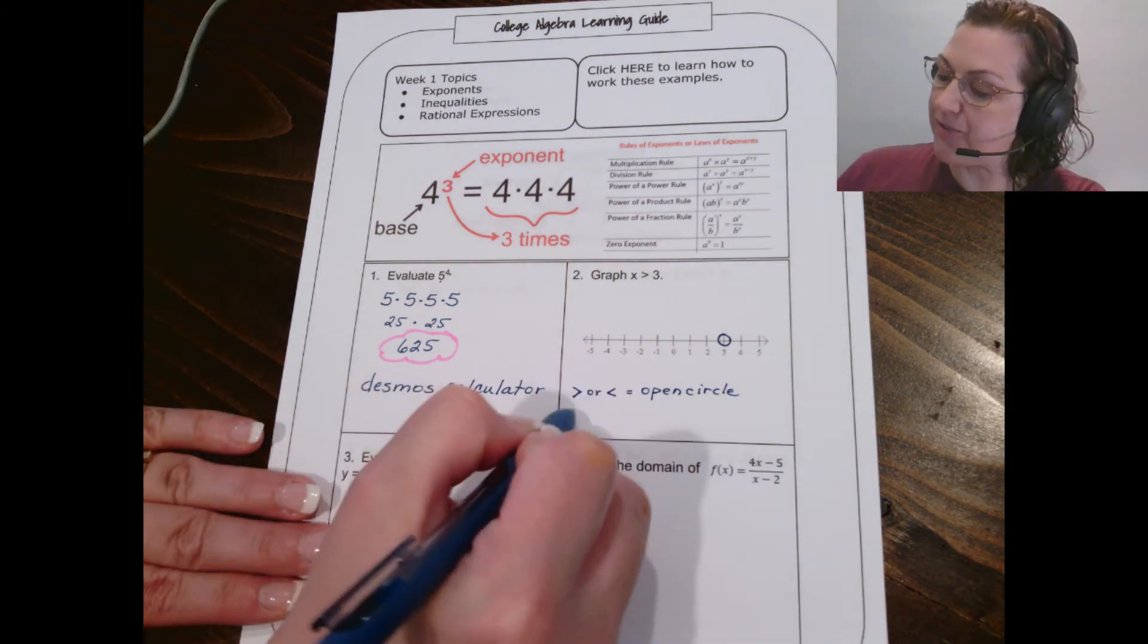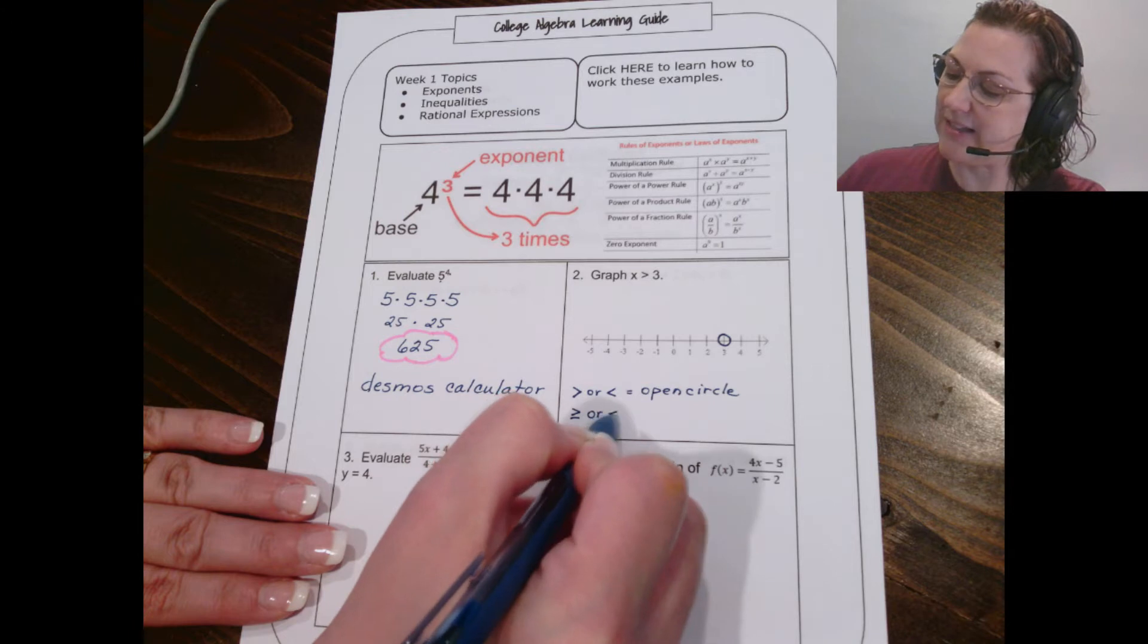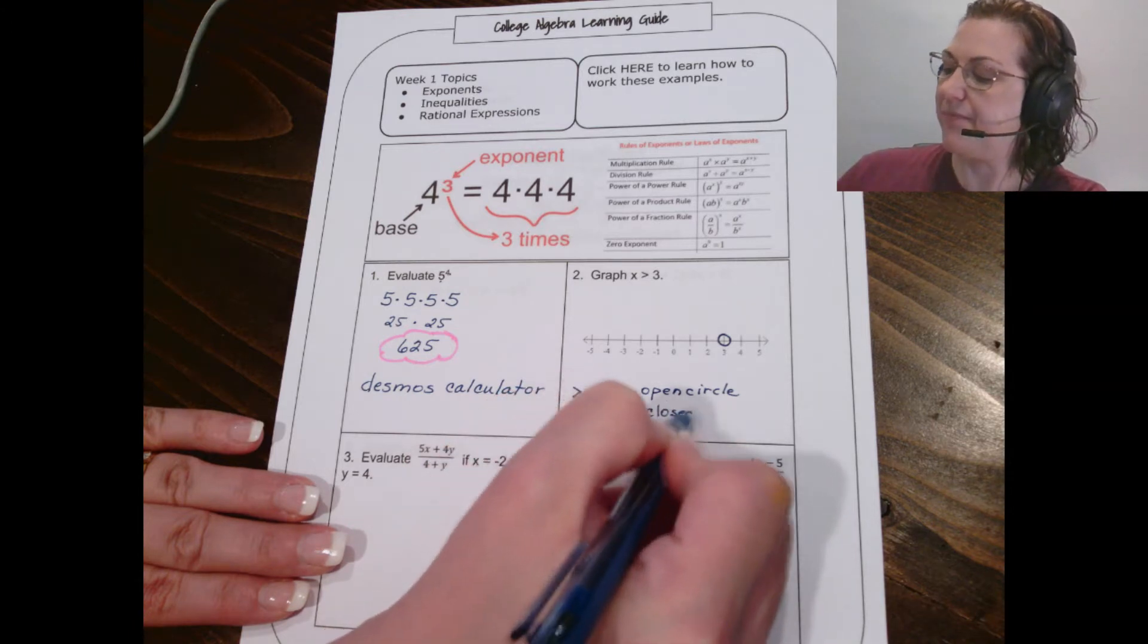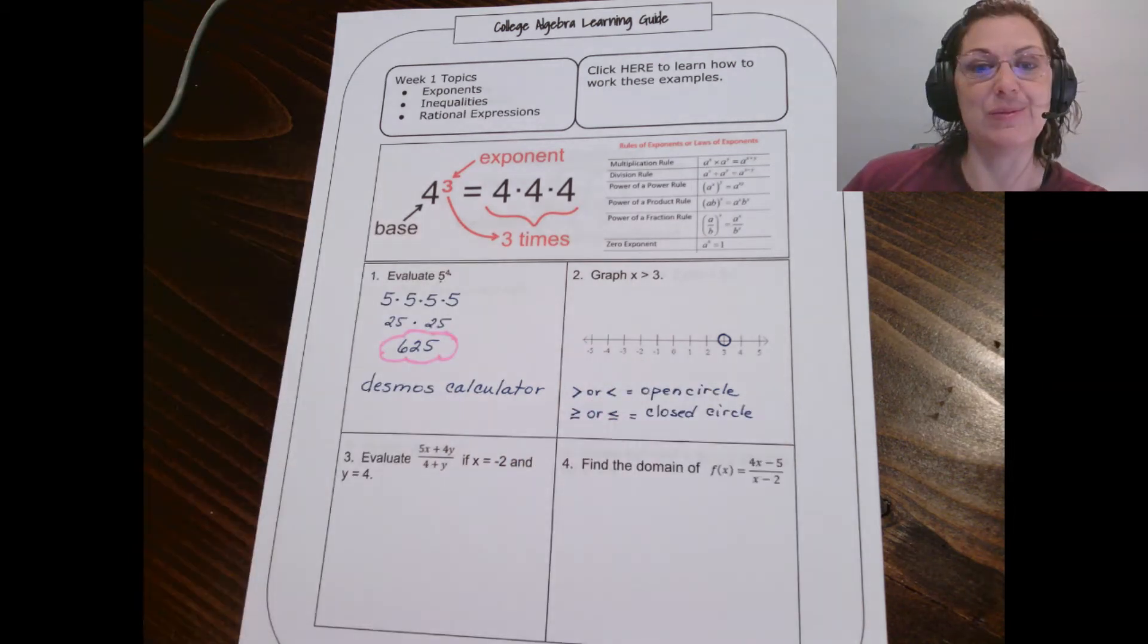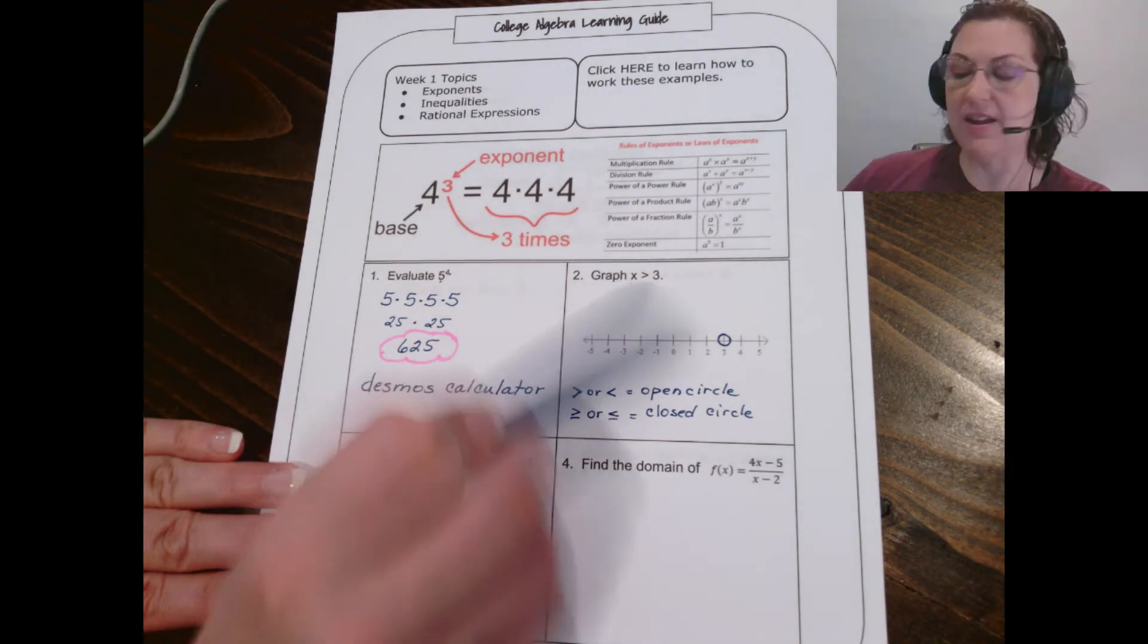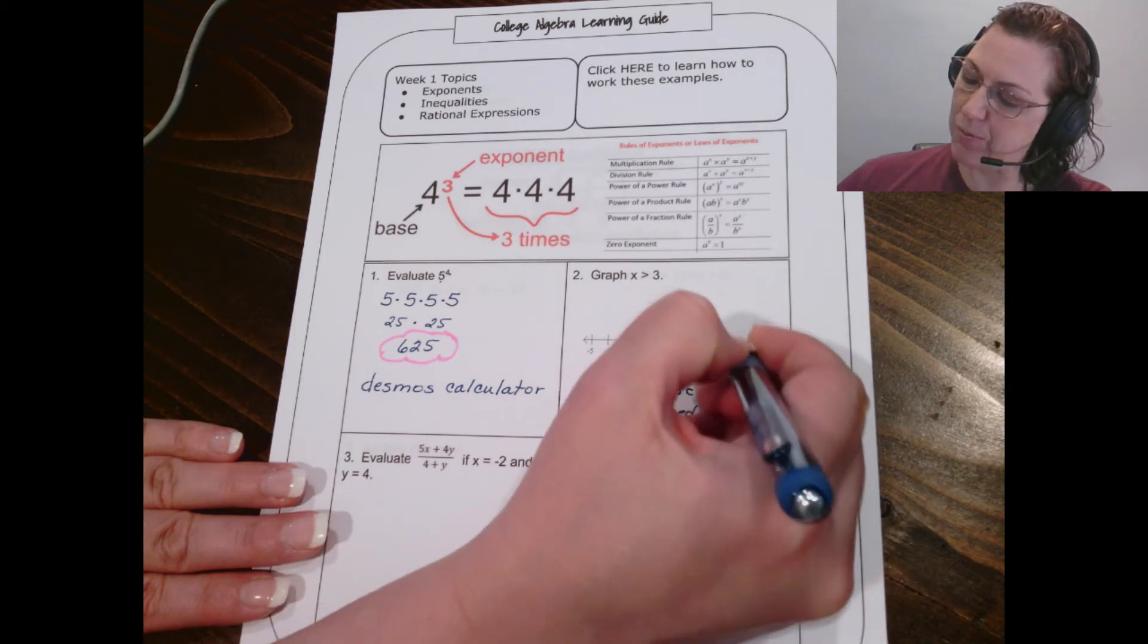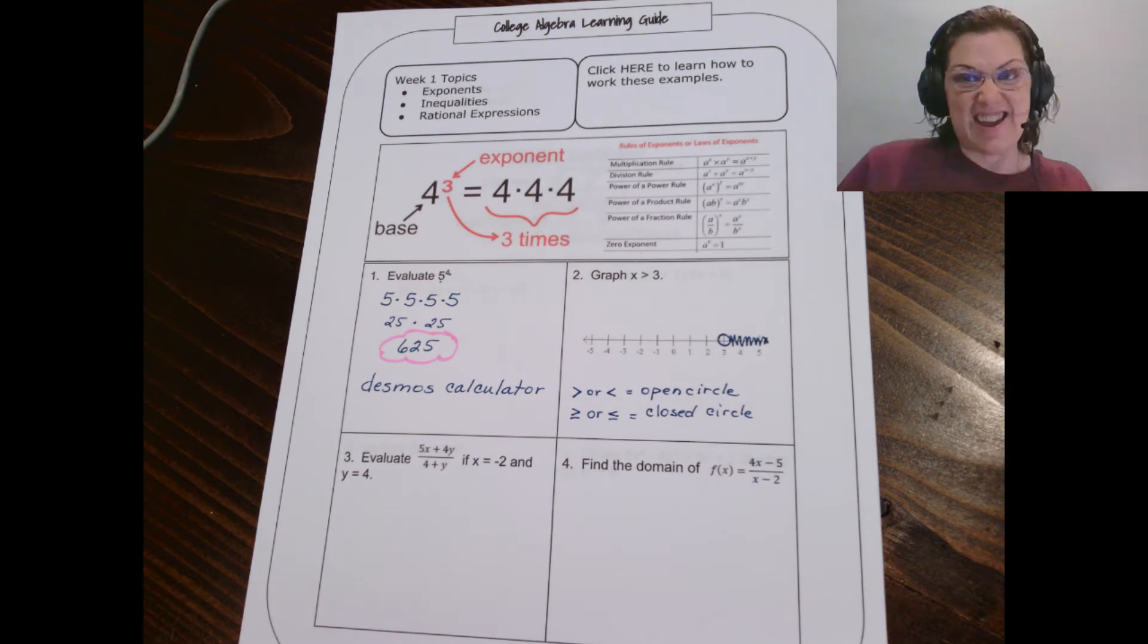Okay, now just for our notes' sake, a greater than or equal to or a less than or equal to means a closed circle. That just means you would color in that circle. Now where are the numbers that are greater than 3? They are to the right, so we shade the portion to the right. And that's it, that's graphing an inequality.